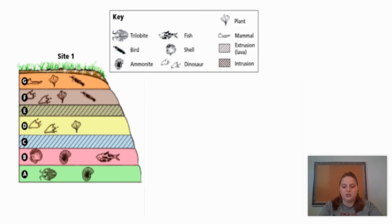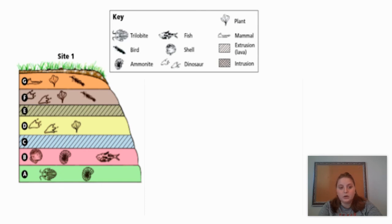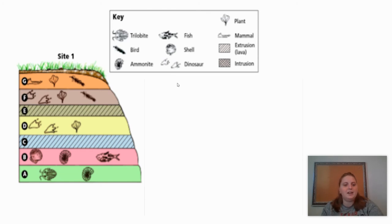So let's answer a few questions together. Which layer is the oldest? If it's on the bottom, it's the oldest — so the answer is rock layer A. Which came first — dinosaurs or trilobites? I'll look at which one evolved first. Dinosaurs were around for layers F and D; trilobites are only in layer A. Since A comes before layers D and F, trilobites came first.